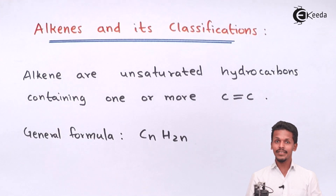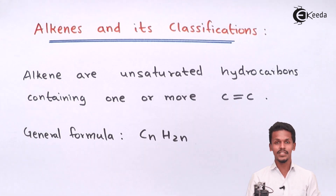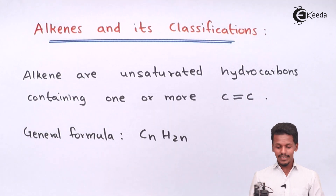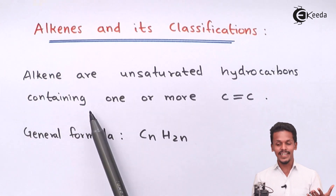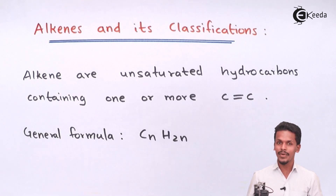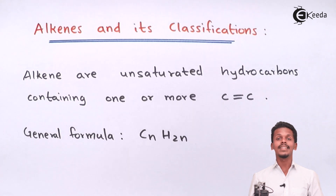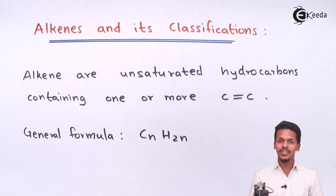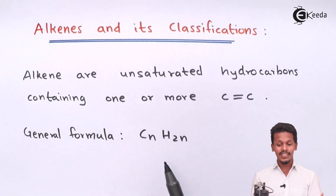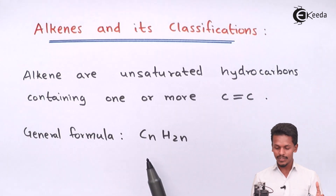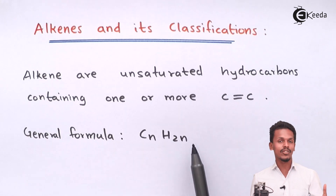So here we are going to talk about alkenes and its classification. Before learning about its classification, let us understand what alkenes actually are. Alkenes are unsaturated hydrocarbons containing one or more carbon-carbon double bonds, or we could say these are aliphatic hydrocarbons which consist of one or more carbon-carbon double bonds. The general formula in the case of alkenes is CnH2n.